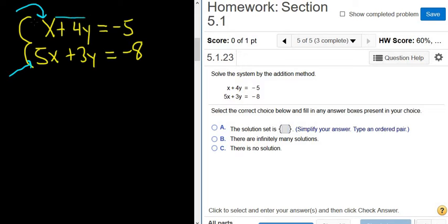So we're going to multiply this entire first equation by negative 5. That will give us negative 5x, and then negative 5 times 4 is negative 20, and then negative 5 times negative 5 is positive 25.